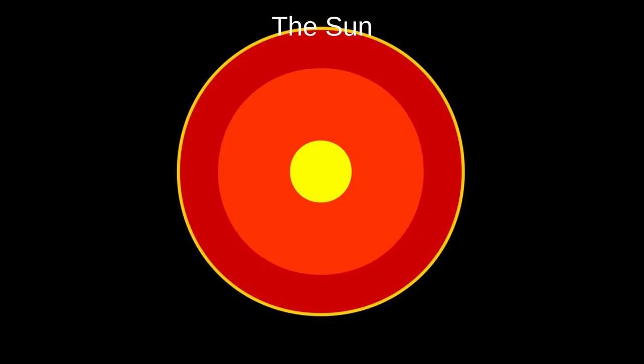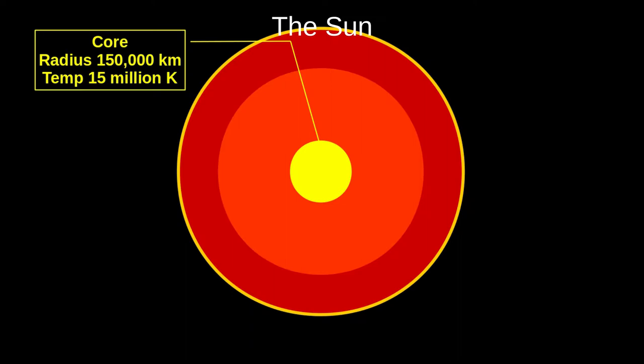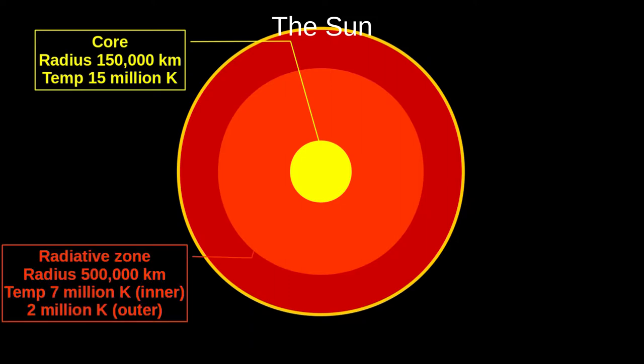The Sun's interior is made of four main parts. The core is where the nuclear fusion that powers the Sun takes place. It's about 20-25% of the Sun's radius, with extreme pressures and temperatures as high as 15 million Kelvin. Past that is the radiative zone. Here, the energy produced in the core is radiated away to the outer layers. Temperatures range from 7 million Kelvin next to the core, to a low of 2 million Kelvin at its outer edge.